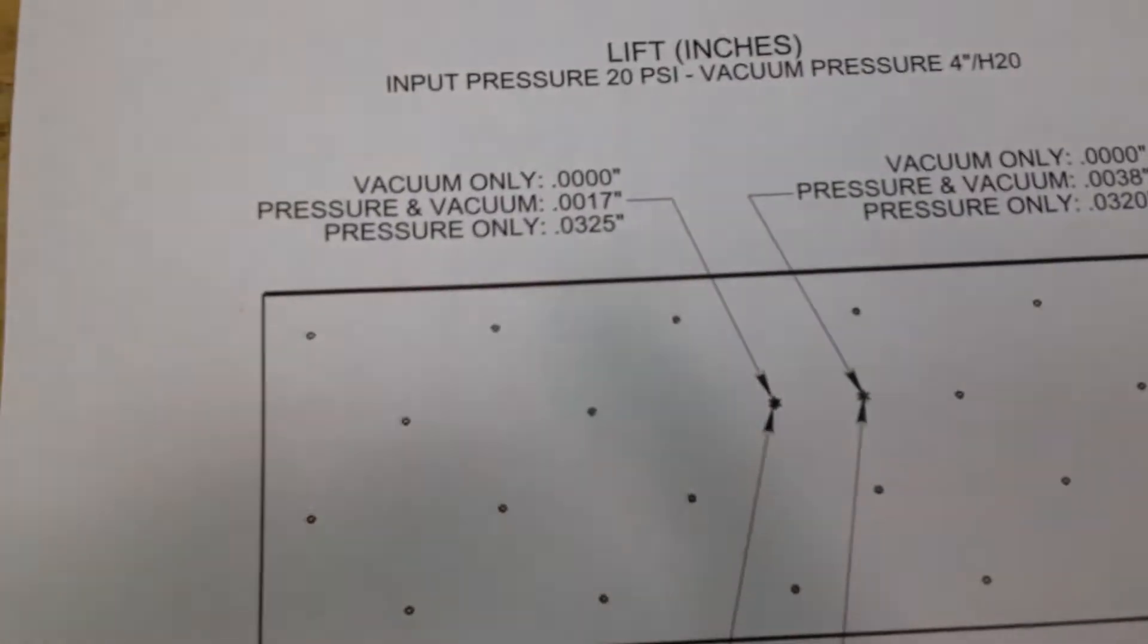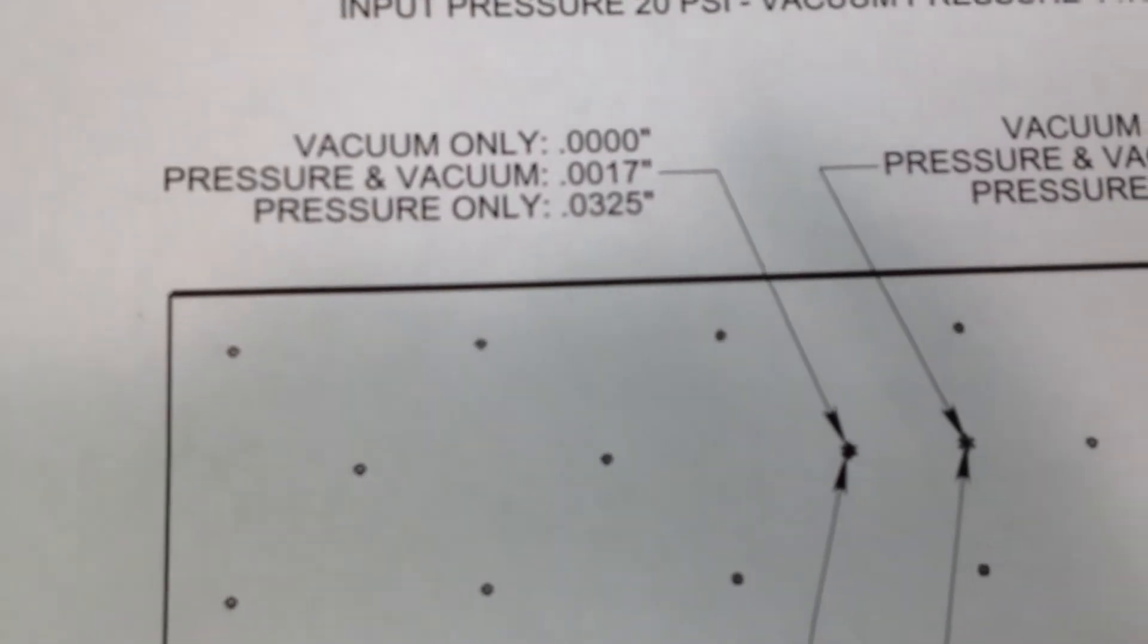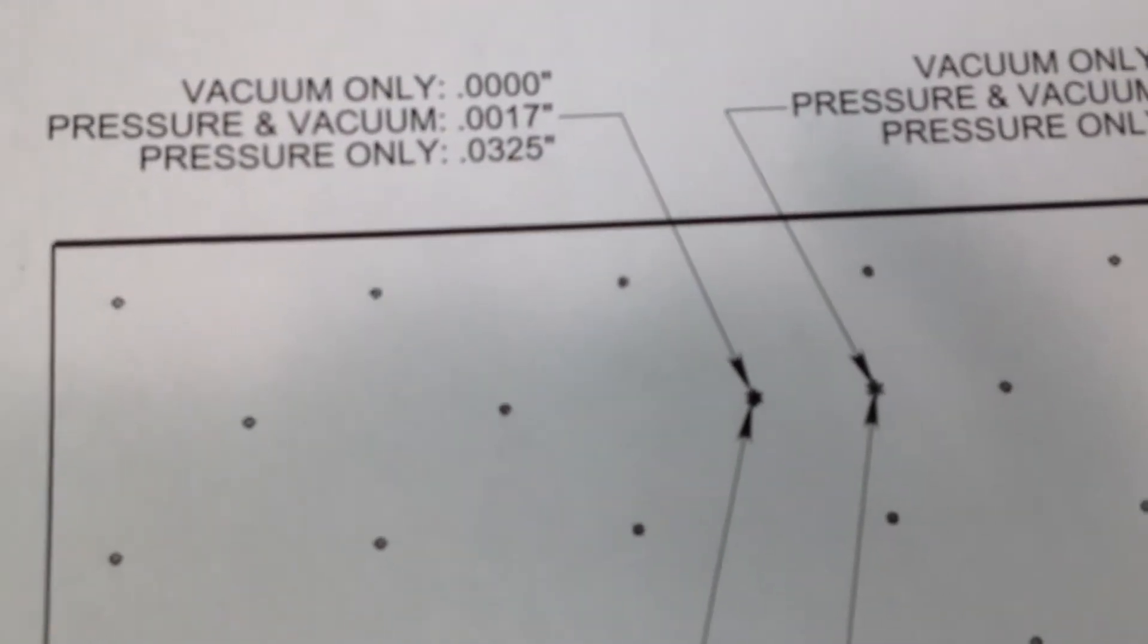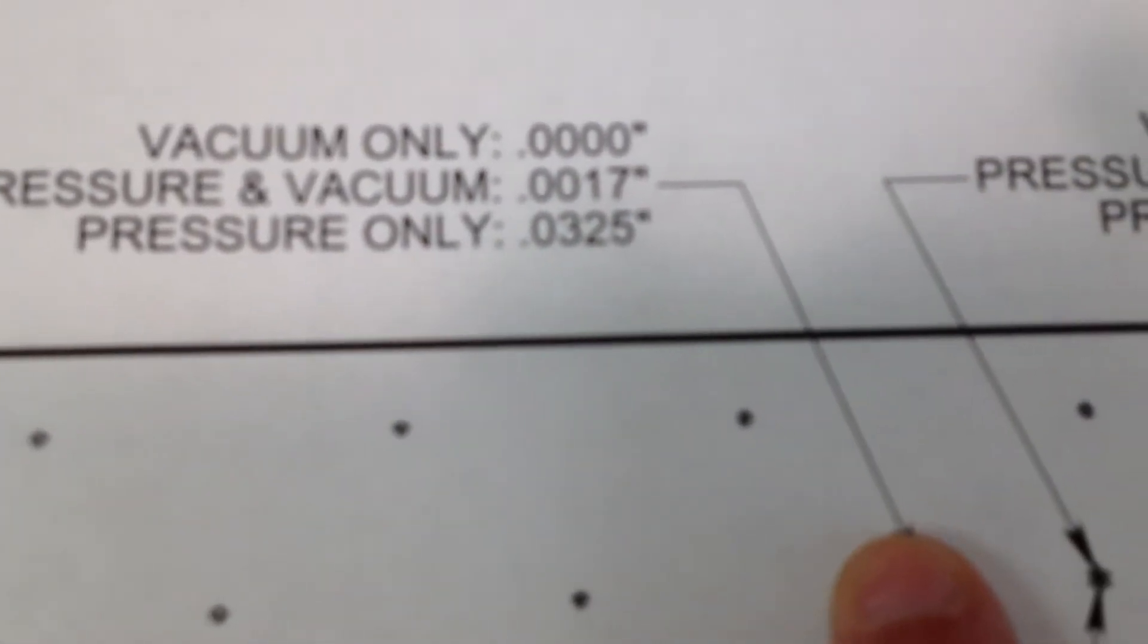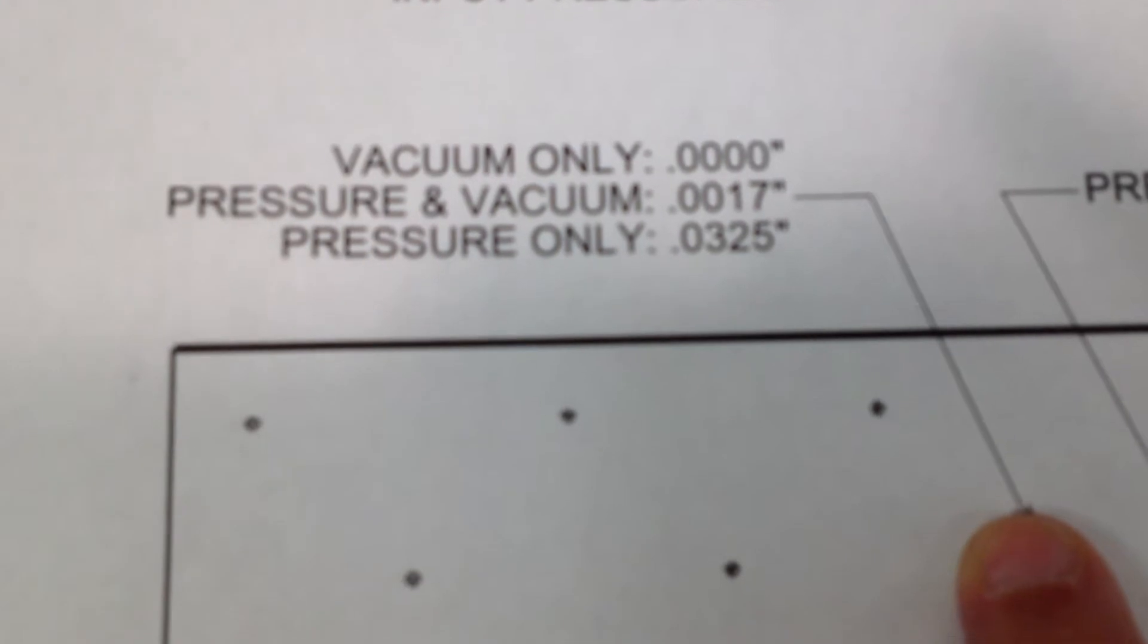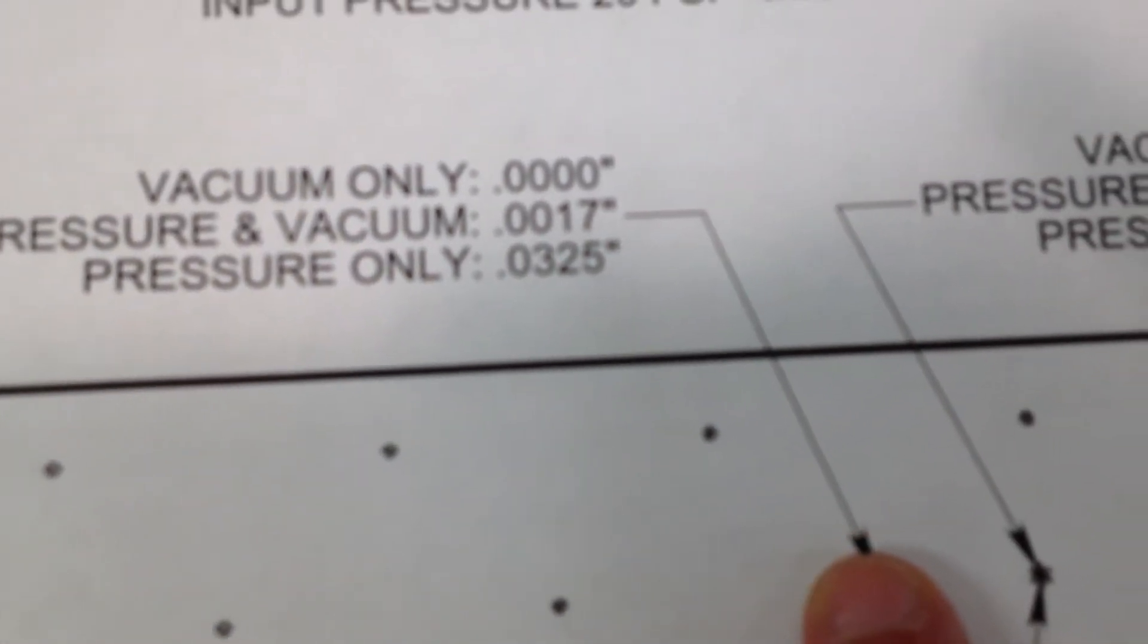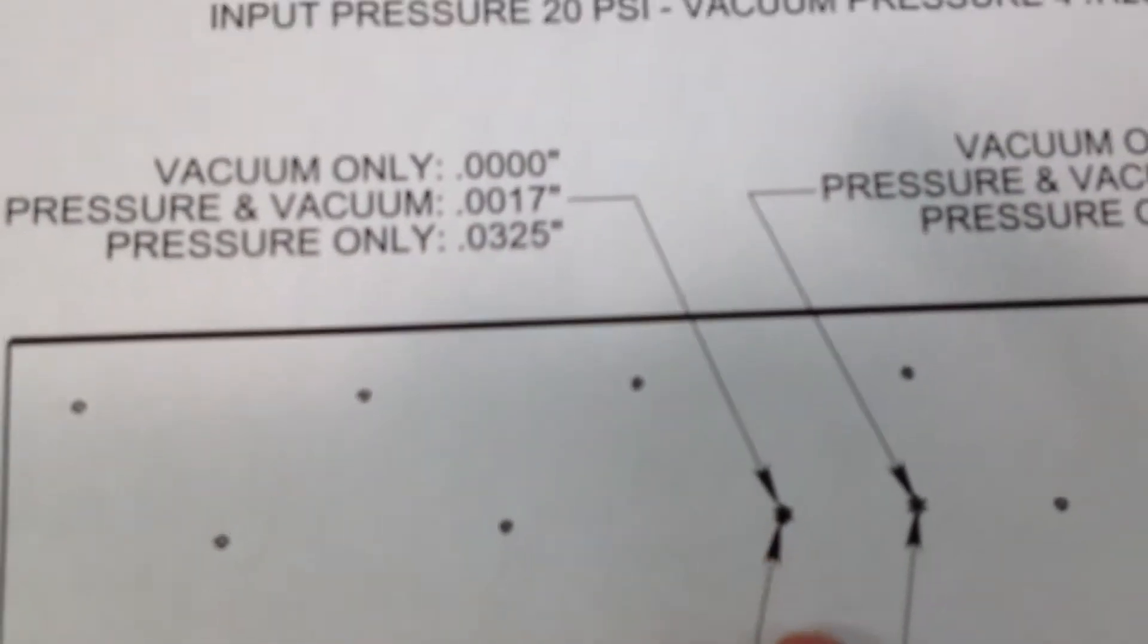Essentially what we have, if we look here to the paper, you can see that directly over the vacuum hole, we have a fly height of about 17 ten-thousandths of an inch. And when you turn the vacuum off, then you've got a fly height of 32 thousandths of an inch. So a big pull-down with the vacuum.